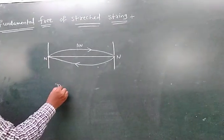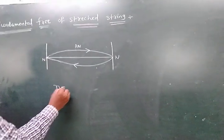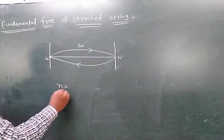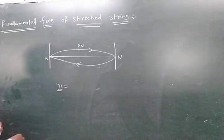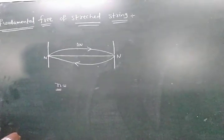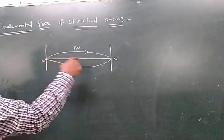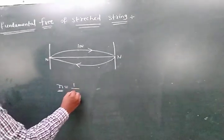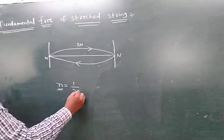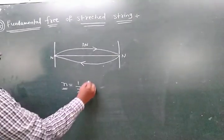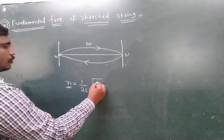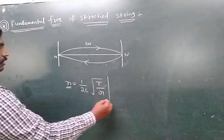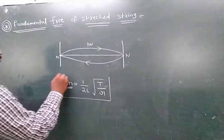This was already derived in the previous classes. The frequency of the stretched string formula is: f = 1/(2L) × √(T/μ), where T is tension and μ is linear mass density.